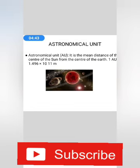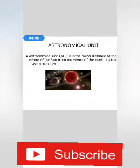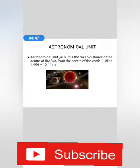Astronomical unit is the mean distance of the center of the sun from the center of the earth. One astronomical unit is equal to 1.496 × 10^11 meter.